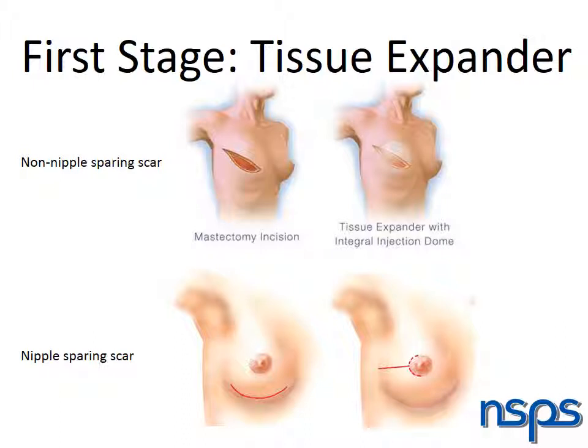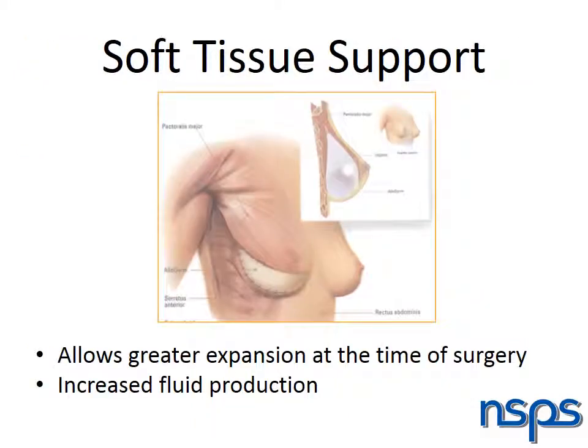If you are having a nipple-sparing mastectomy, this scar may run from the nipple out towards your armpit or may be under the breast in the fold. In some cases, muscle coverage is not adequate and a soft tissue support material, usually alloderm, will be placed in order to secure the pocket in which the implant is placed.